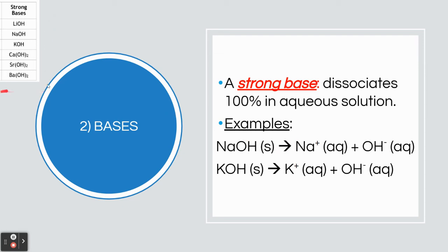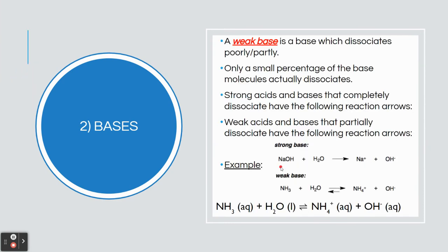Here are the strong bases you should know — the other bases are typically weak. For example, NaOH solid becomes Na+ (aq) and OH- (aq) with a one-way arrow. KOH solid becomes K+ (aq) and OH- (aq), also a one-way arrow. Weak bases dissociate only partially — not 100% — so for weak bases we use a double arrow, unlike strong bases which show 100% dissociation with a single arrow.